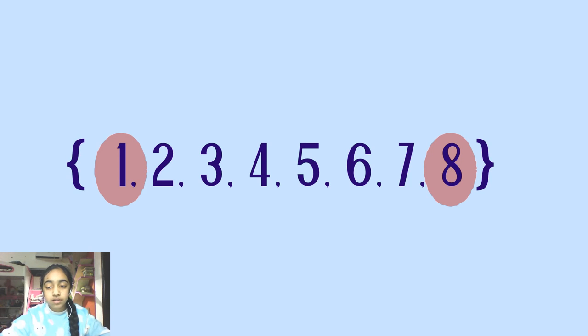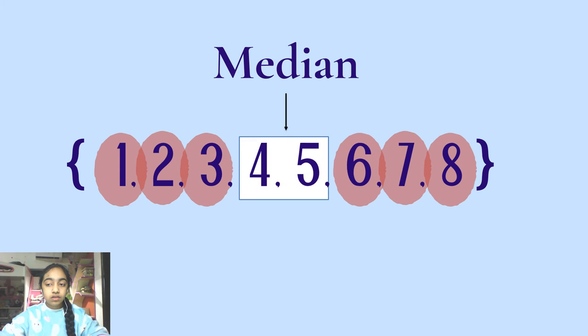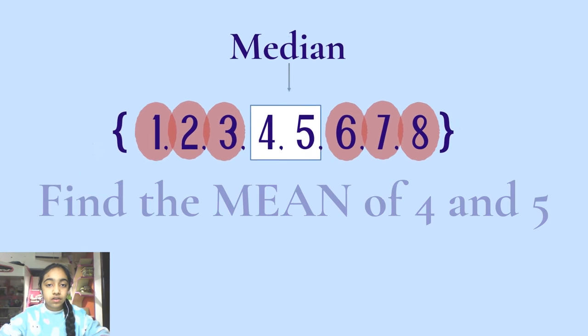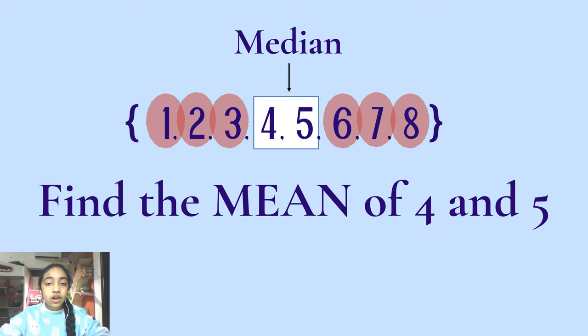Now we do the circling part. But now over here we have reached the end with 2 medians. Now here comes the change. We now need to find the mean of 4 and 5 as these are our last 2 middle numbers.